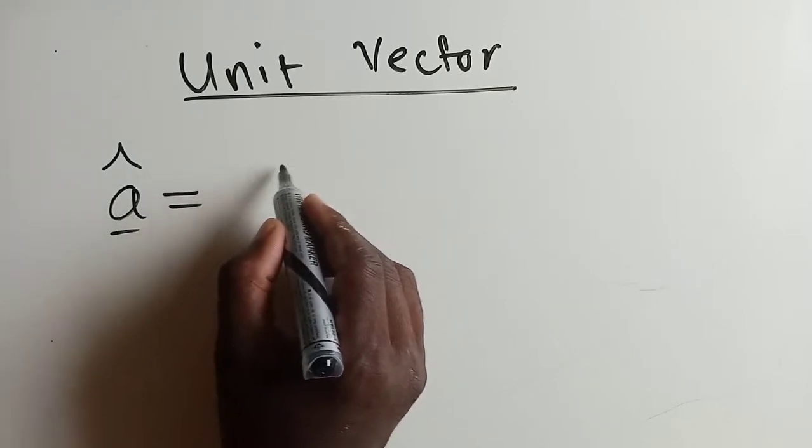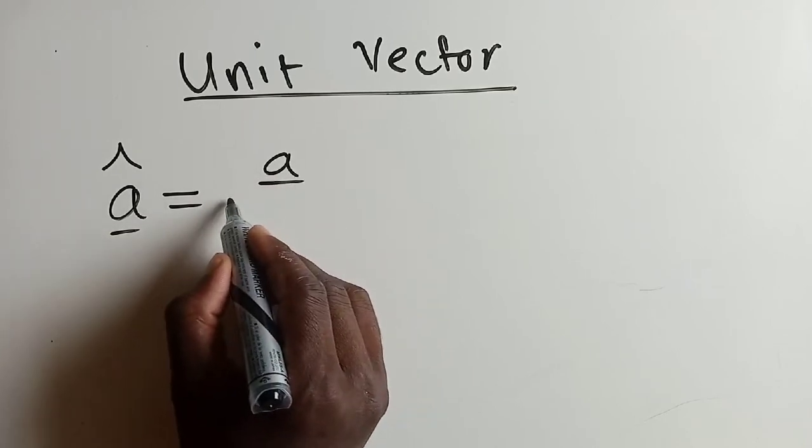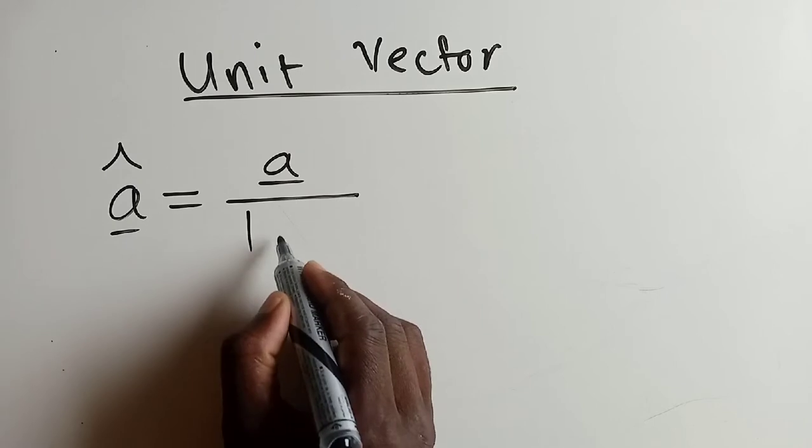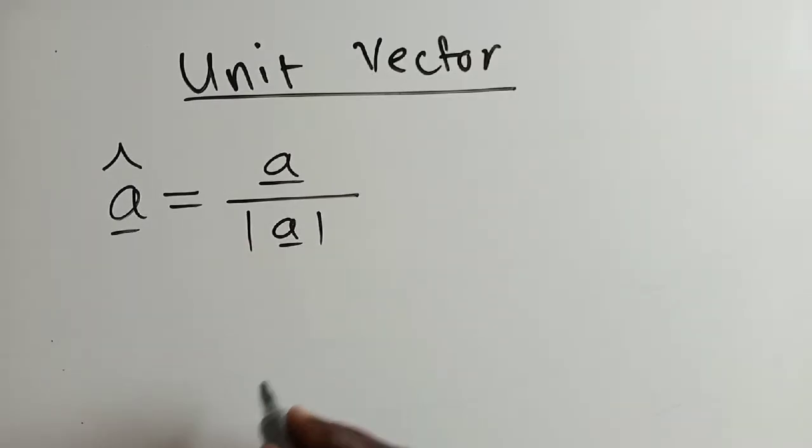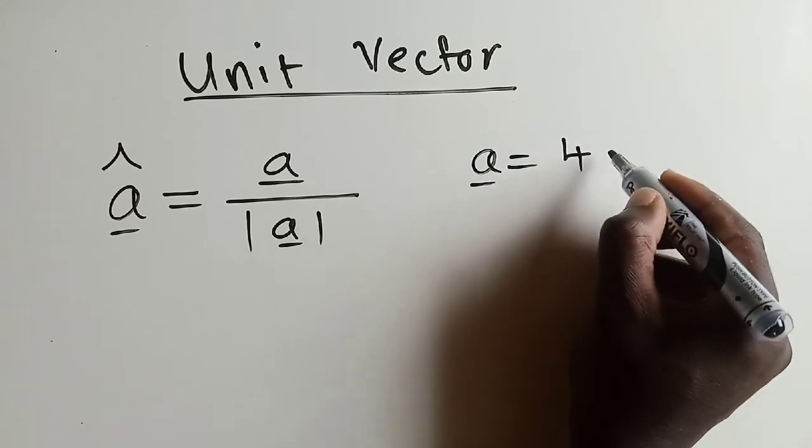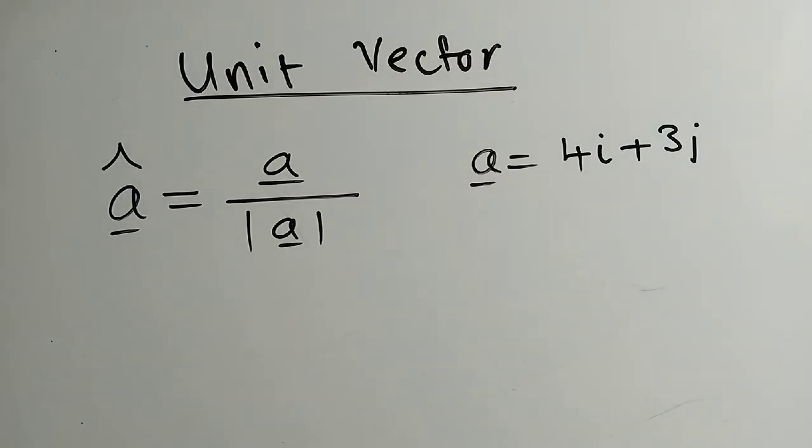This is the formula we use for finding a unit vector. So let's say your vector a is equal to 4i plus 3j, and they would like you to find the unit vector. How do you work it out?